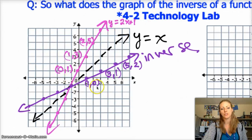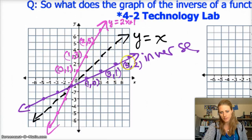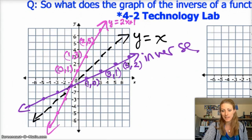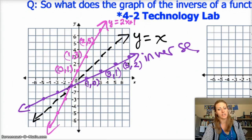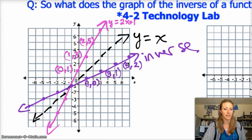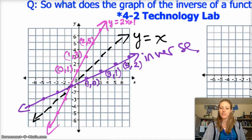So 0, 1 turns into 1, 0. 1, 3 turns into 3, 1. 2, 5 turns into 5, 2. Note that the signs don't change. It doesn't change to a negative and a positive or something like that. It only switches the x and the y.